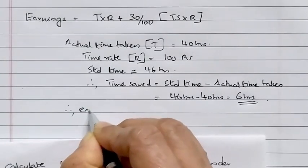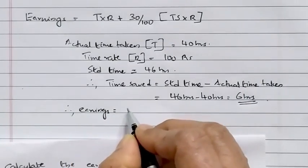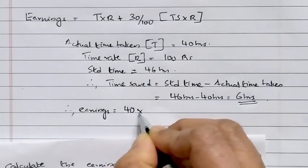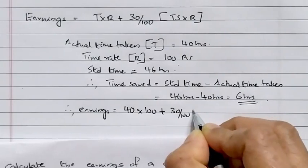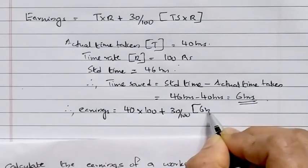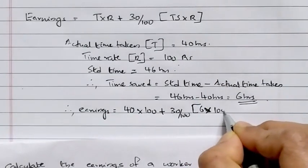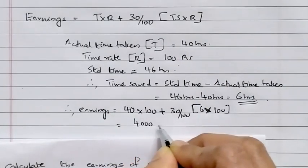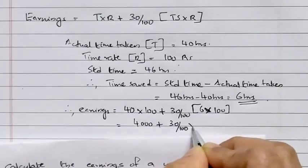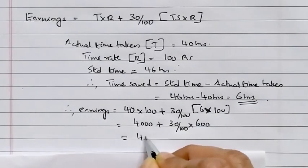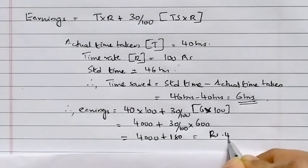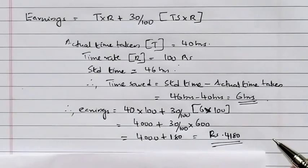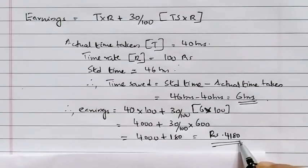Therefore, Earnings = T × R + (30/100) × Ts × R = 40 × 100 + (30/100) × 6 × 100 = 4,000 + 180 = Rs. 4,180. So the worker's earnings under the Halsey Weir Scheme are Rs. 4,180.